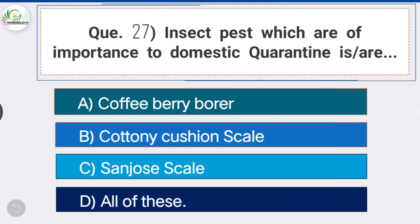Question 27: Insect pests of importance in domestic quarantine are Option D, the correct answer: all of these. The insect pests of importance in domestic quarantine are coffee berry borer, cottony cushion scale, and San Jose scale.